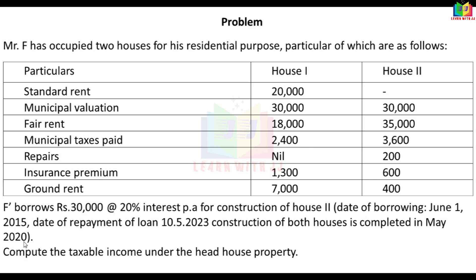Pre-construction interest is calculated from the date of borrowing to the date of repayment or the date of completion of construction, whichever is earlier. The earlier date here is the date of completion — May 2020 — and specifically up to 31st March 2020. This period defines the pre-construction interest calculation window.